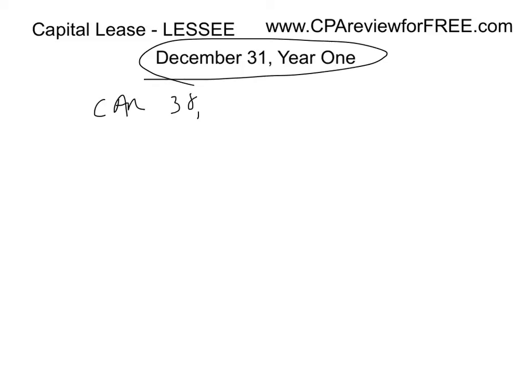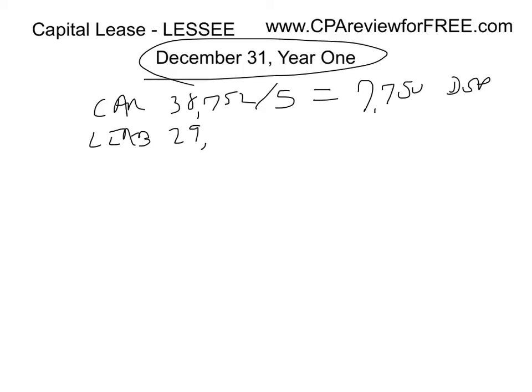At the end of Year 1, the car is on the books at $38,752 with a five-year life, so depreciation is $7,750 per year. The liability is $29,160. Applying the 12% incremental borrowing rate: 12% of $29,160 equals $3,499 of interest expense for Year 1. Two things must be done at December 31.